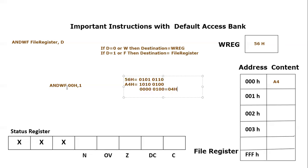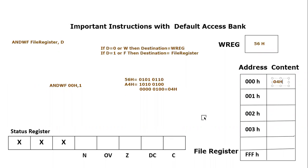We know that with this instruction the destination bit is one, which means the result will be stored in the file register. So A4 hex will be updated and become 04 hex.